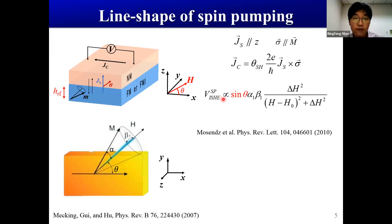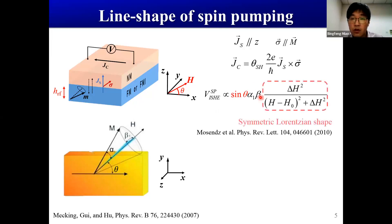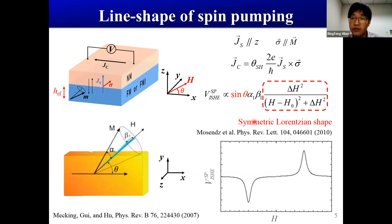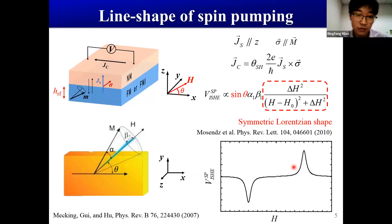The spin-pumping-induced inverse spin Hall effect scales with the product of the in-plane precession angle alpha_1 and out-of-plane precession angle beta_1. This product also scales with the absorbed microwave power. So the spin-pumping curve has a symmetric Lorentz line shape. Because the spin polarization can be aligned by the magnetic field, when we reverse the magnetic field we obtain an opposite spin-pumping signal — it is anti-symmetric with the magnetic field.